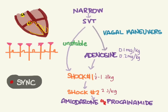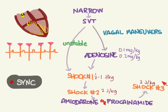If the tachycardia hasn't broken after the second shock, give either amiodarone or procainamide — one or the other, not both. These must be infused slowly because they can cause hypotension and other side effects. If that still doesn't work, you could try a third shock, and if you're still not achieving success, consult your pediatric cardiologist on what to do next.